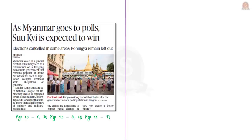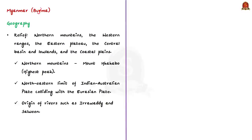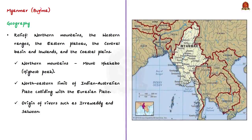This news article is about the recently held general elections in Myanmar. In this context, let us discuss about Myanmar from an exam perspective. Myanmar was formerly called Burma. It is a country located in the western portion of mainland Southeast Asia. The capital of Myanmar is Naypyidaw. Myanmar is bordered by China to the north and northeast, Laos to the east, Thailand to the southeast, the Andaman Sea and Bay of Bengal to the south and southwest, Bangladesh to the west, and India to the northwest.